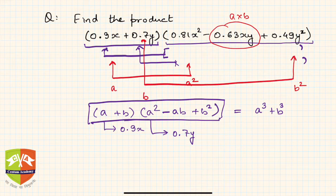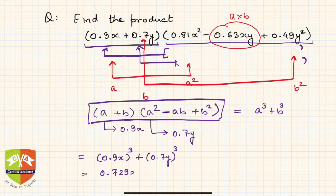Hence this particular expression will be reduced to 0.9x cubed plus 0.7y cubed, which is nothing but 0.729x cubed and 0.343y cubed.